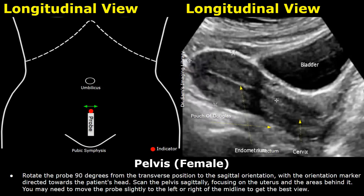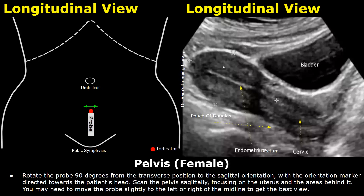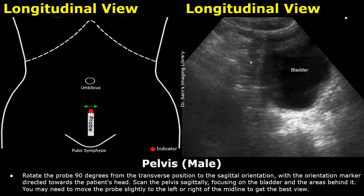You can also scan the pelvic region in the longitudinal plane, with the probe indicator towards the patient's head, positioning the probe in the midline in the suprapubic region. In a female patient, the uterus will be visible — keep an eye out for free fluid behind the uterus in the Pouch of Douglas. In a male patient, the probe placement is the same, and you may find free fluid behind the bladder.